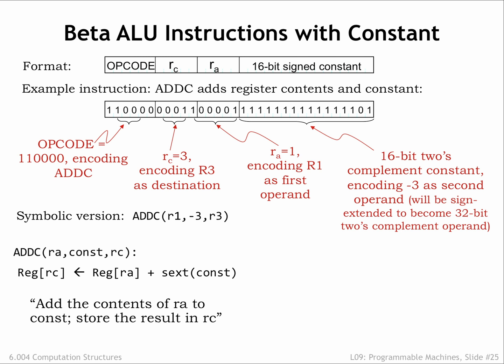One technical detail needs discussion. The instruction contains a 16-bit constant, but the datapath requires a 32-bit operand. How does the hardware convert from, say, the 16-bit representation of minus 3 to the 32-bit representation of minus 3? Comparing the 16-bit and 32-bit representations, we see that if the 16-bit 2's complement constant is negative, the high 16 bits of the equivalent 32-bit constant are all 1s. Thus the operation the hardware needs to perform is sign extension, where the sign bit of the 16-bit constant is replicated 16 times to form the high half of the 32-bit constant. The low half is simply the 16-bit constant from the instruction. No additional logic gates are needed — we can do it all with wiring.